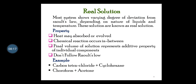Most systems show varying degrees of deviation from Raoult's law depending on the nature of liquids and temperature — these are known as real solutions. Properties of real solutions: heat may be absorbed or evolved, chemical reactions may occur between components, and they do not follow Raoult's law. Examples are carbon tetrachloride plus cyclohexane, and chloroform plus acetone.